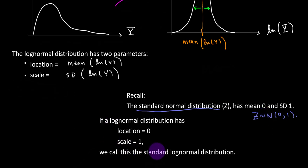Now if a log-normal distribution has location 0 and scale 1, we would call this not the standard normal, but the standard log-normal distribution.